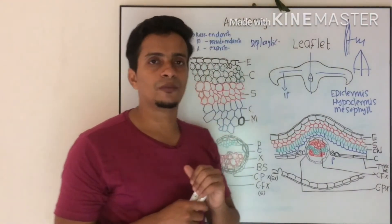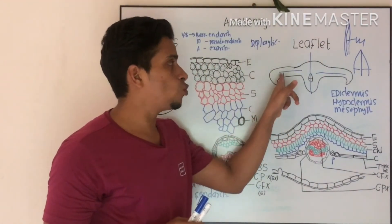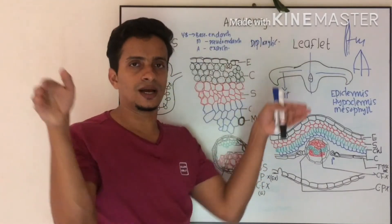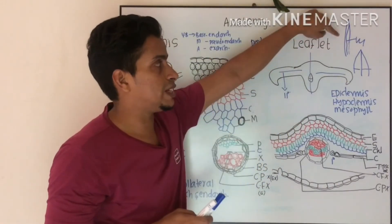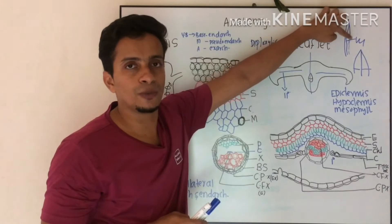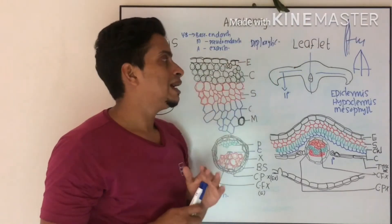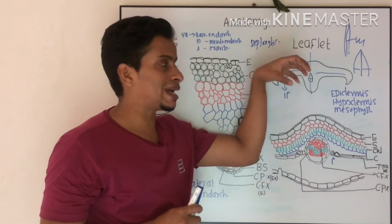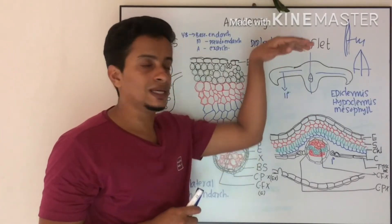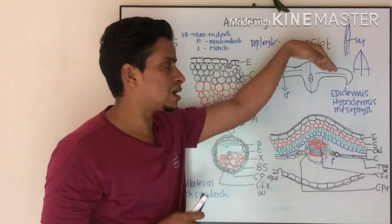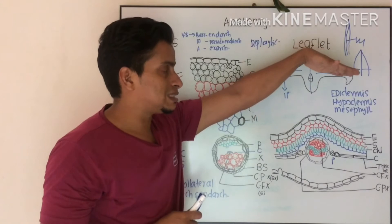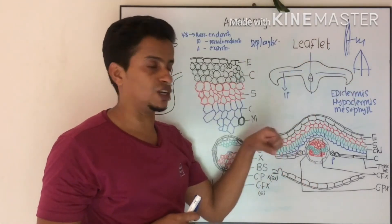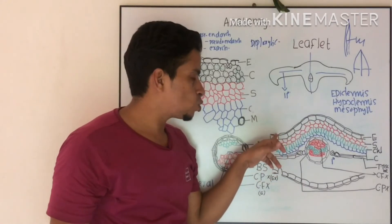Coming to the internal anatomy of the leaflet, the outline will be like this — one midrib and lateral veins. The close anatomy shows it is also differentiated into epidermis, hypodermis, mesophyll, and vascular bundles.